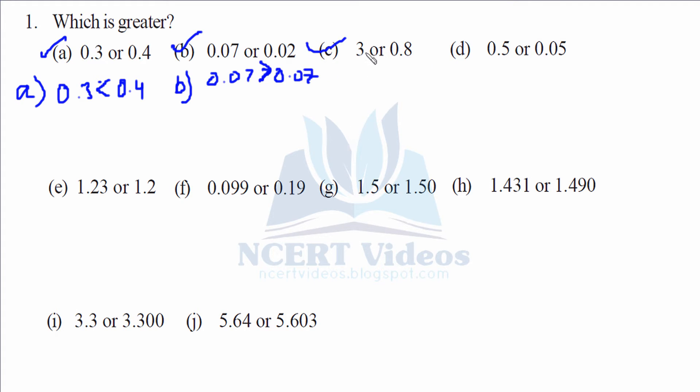Part c: three has no decimal in it, therefore it is a whole number. Therefore it is greater than 0.8. Three is greater than 0.8, that's how we'll represent it.